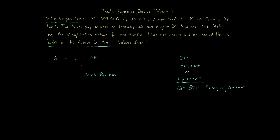Discounts and premiums can be challenging the first time. This question has a discount involved. You know it's a discount when the bond is issued below par: if it's issued at par, that means 100%. Here we have 99, which is less than 100, so it's issued at a discount. If it's more than 100, it's a premium. If issued at a discount, the bond's interest rate is less than the market rate; if issued at a premium, the bond's interest rate is more than the market rate.